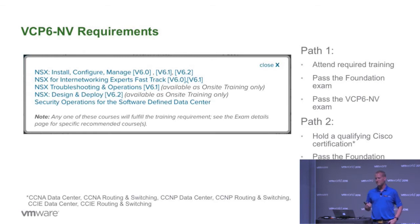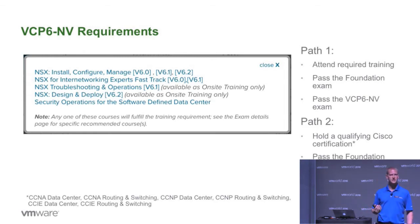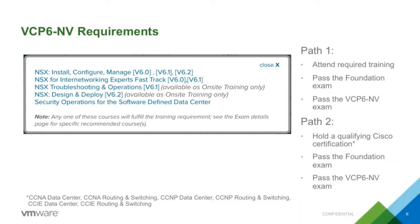For the VCP NV, the NV track is for NSX at this point in time, and it has a couple of fast tracks. For your CCNAs and CCNPs, you can skip the educational requirement and take the VCP NV exam without any extra education. If you are a CCIE, you can skip the VCP level altogether and go straight to the VCIX NV exam without taking any education courses or going through the VCP level.